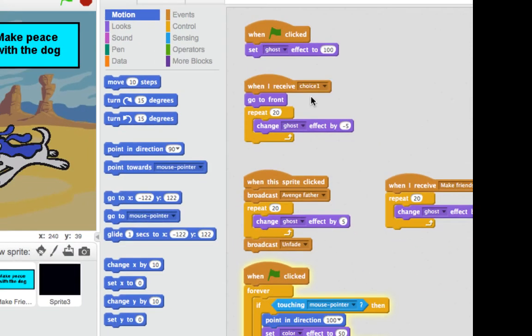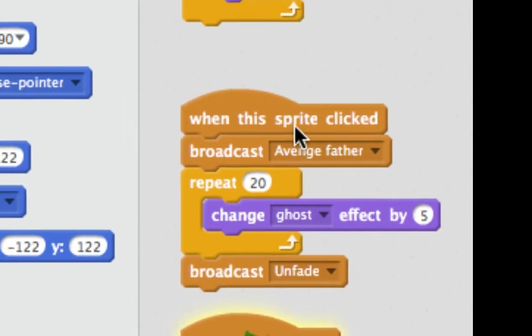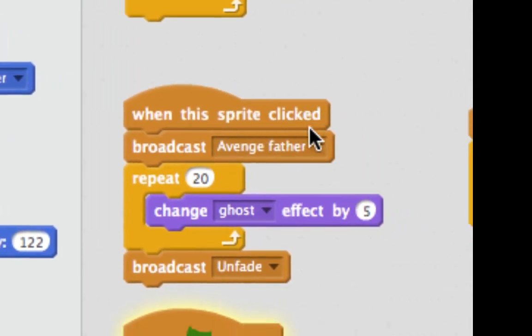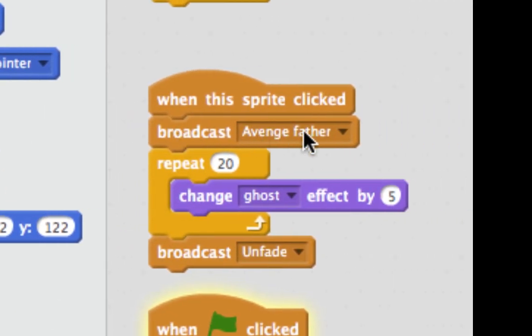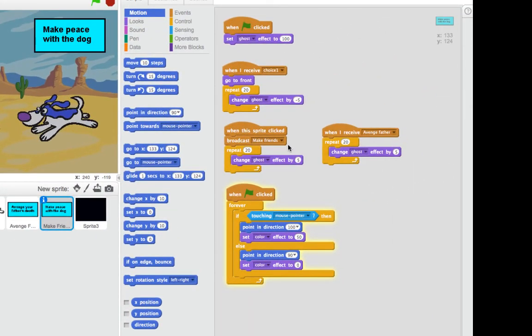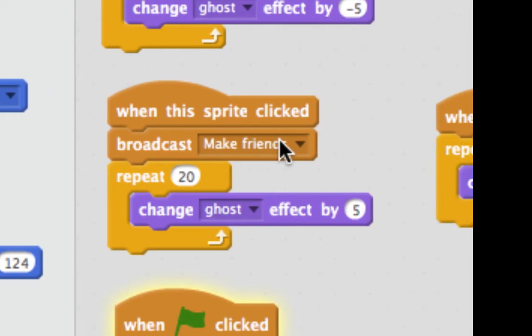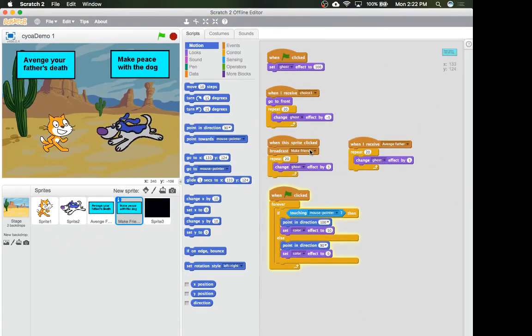And then you can pick either button. Check it out. If I click on the Avenge Father button, it broadcasts Avenge Father. And if I click on the Make Peace with the Dog button, it broadcasts Make Peace or Make Friends, apparently. So those broadcasts get received by everything else. So the buttons will receive those things. The characters will receive those things. And they'll start a different storyline.